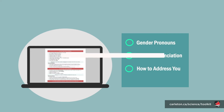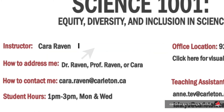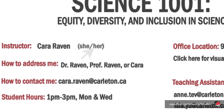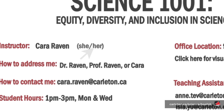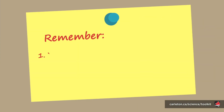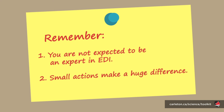If you're not quite sure how to implement these changes or why these things are so impactful, fear not because we've got you covered. The toolkit comes with a course outline for you to download, edit, and use as you please. You'll also find an annotated version that includes short explanations for each added element and change. Remember, nobody expects you to be an expert in EDI, and any small actions you try really can make the world of difference for your students.